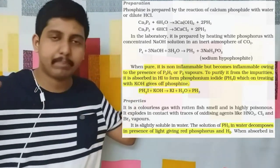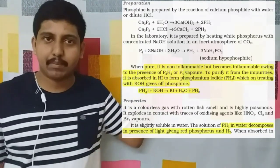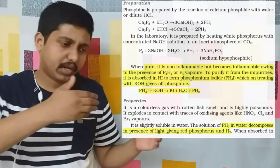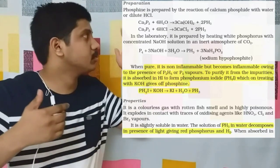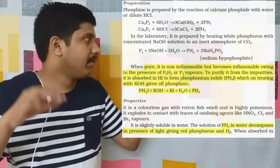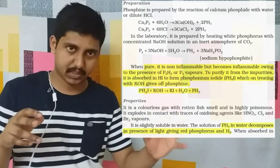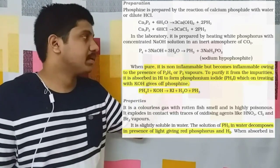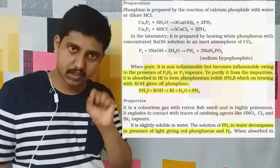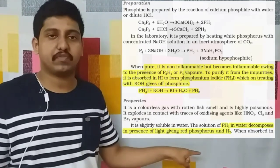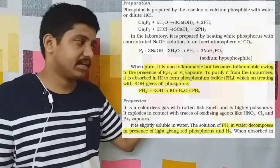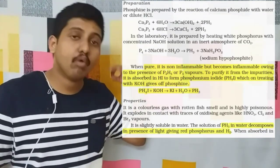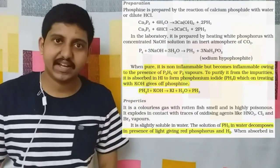Phosphine PH3 preparations: P4 plus NaOH was one preparation. Another is calcium phosphide Ca3P2 reacting with water or HCl to produce phosphine gas. But these reactions do not produce pure phosphine. For pure phosphine, the PH3 obtained is added with HI to form PH4I, and this PH4I is added to KOH, which combines with iodine to form KI, releasing pure PH3 along with water.